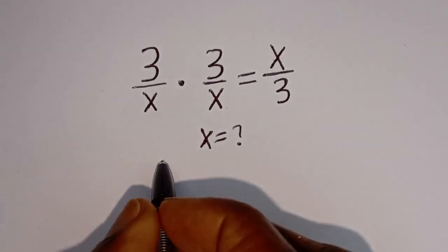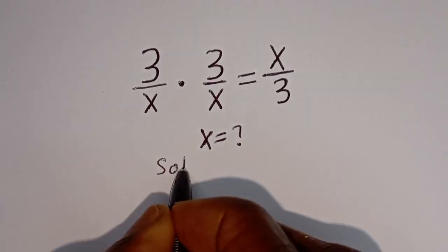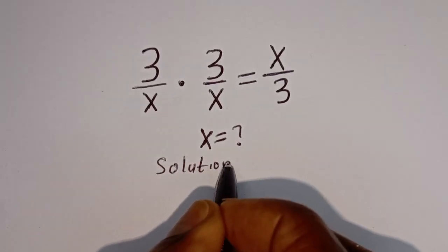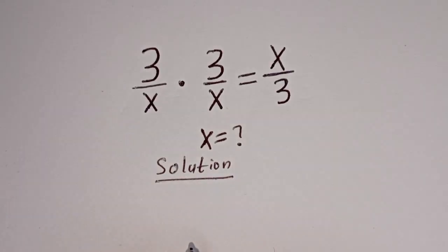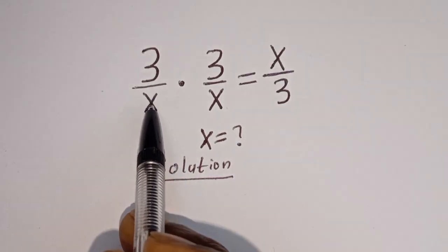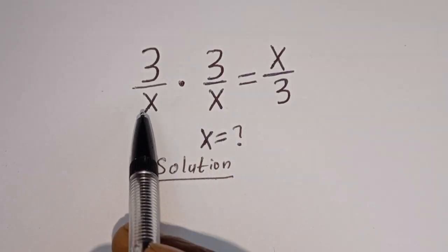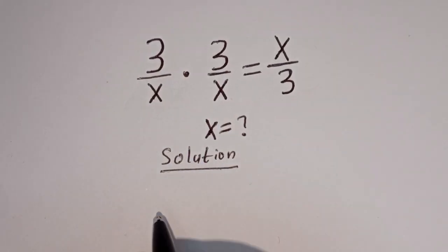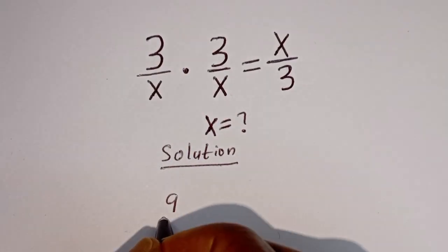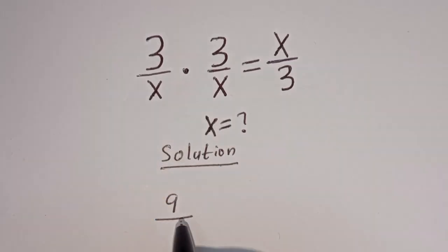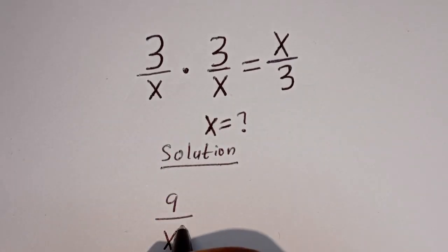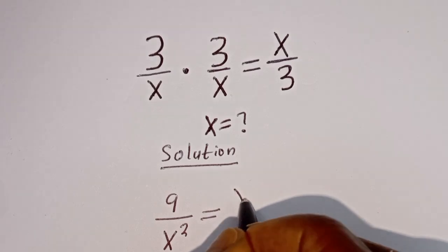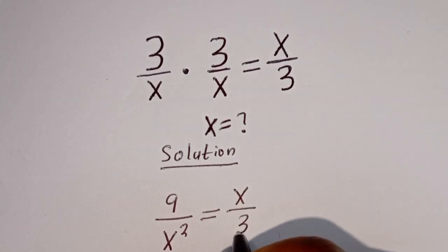Solution. Here we have 3 divided by s multiplied by 3 divided by s. 3 times 3 is 9, divided by s times s, which is s squared, is equal to x divided by 3.